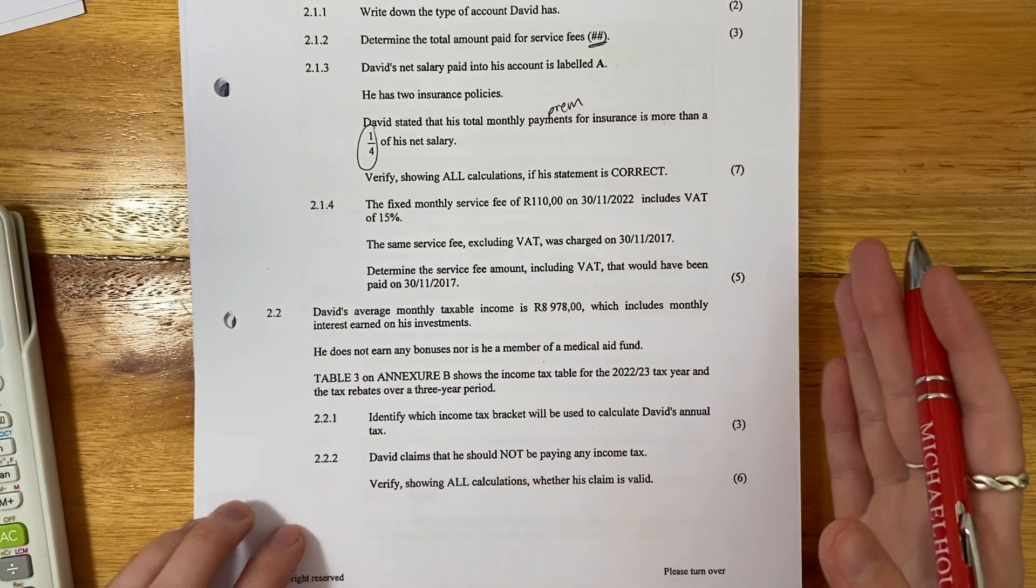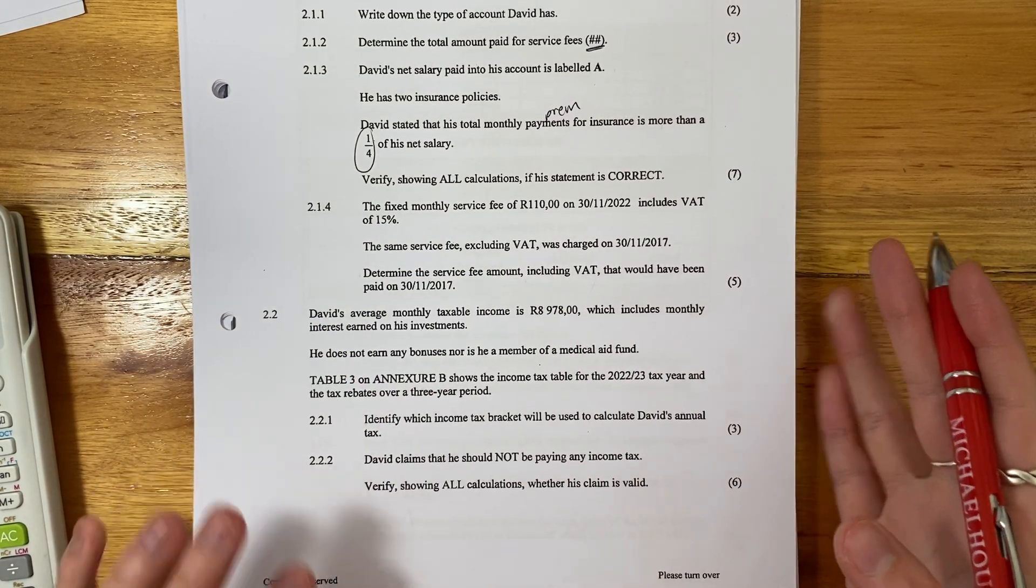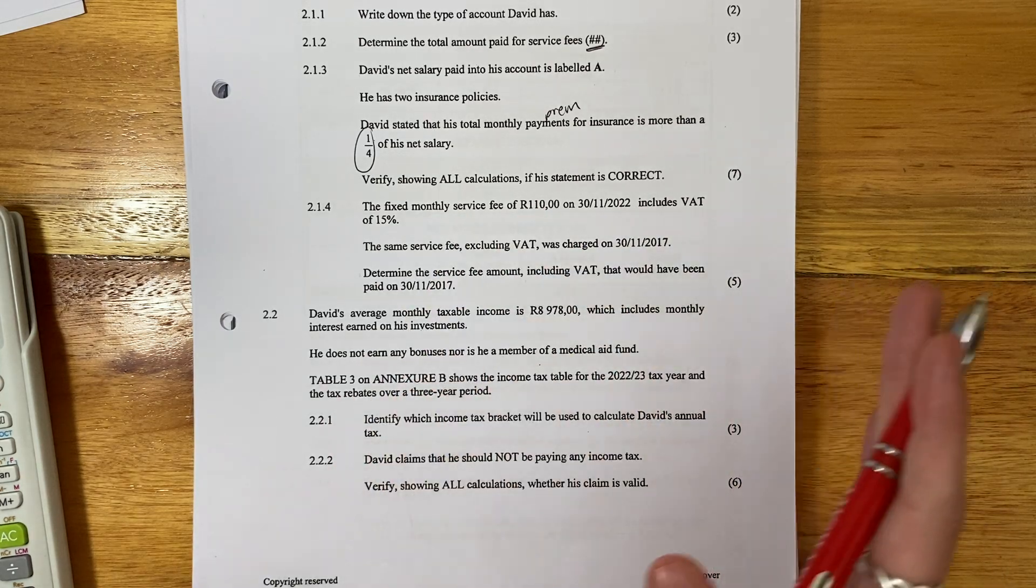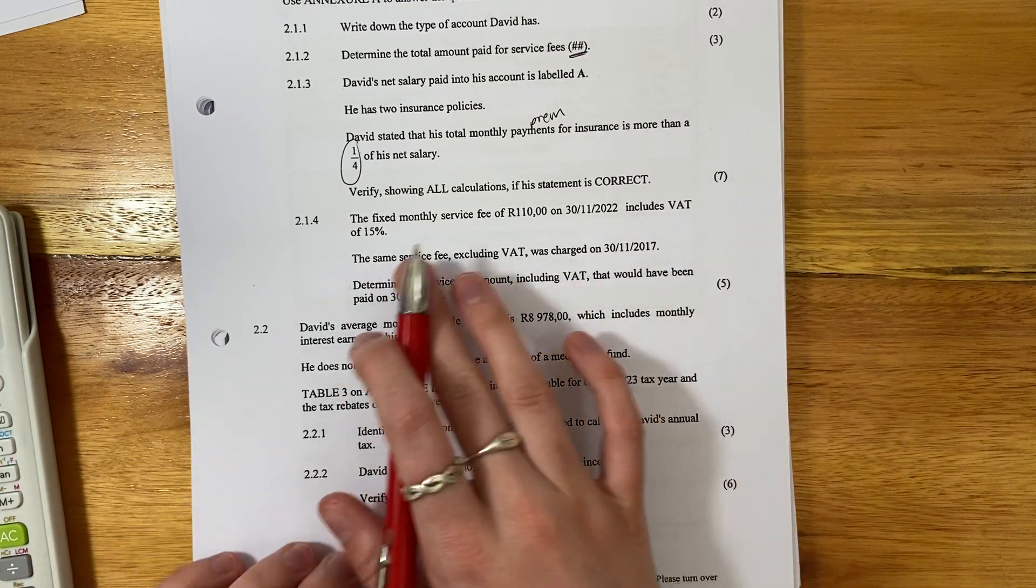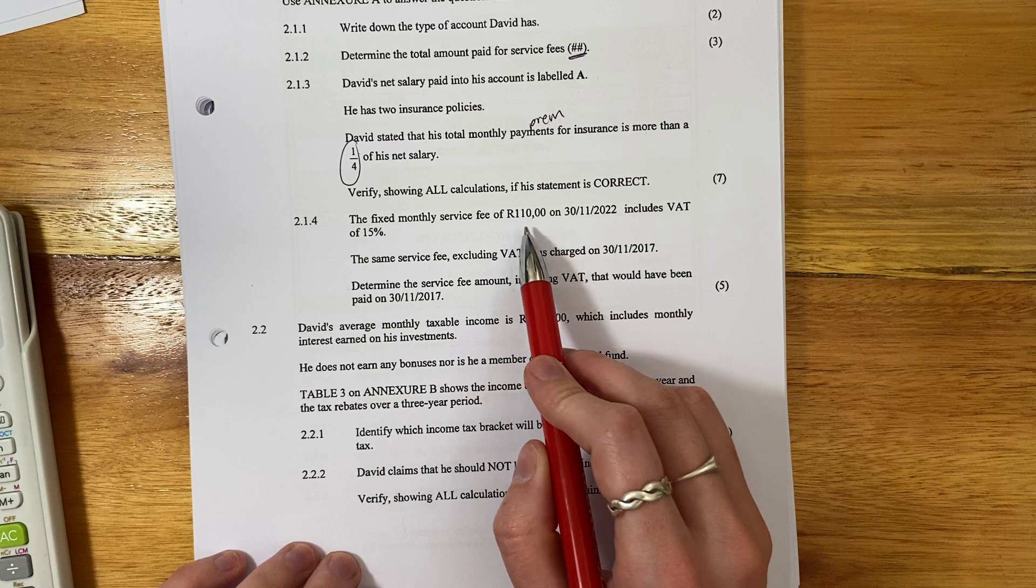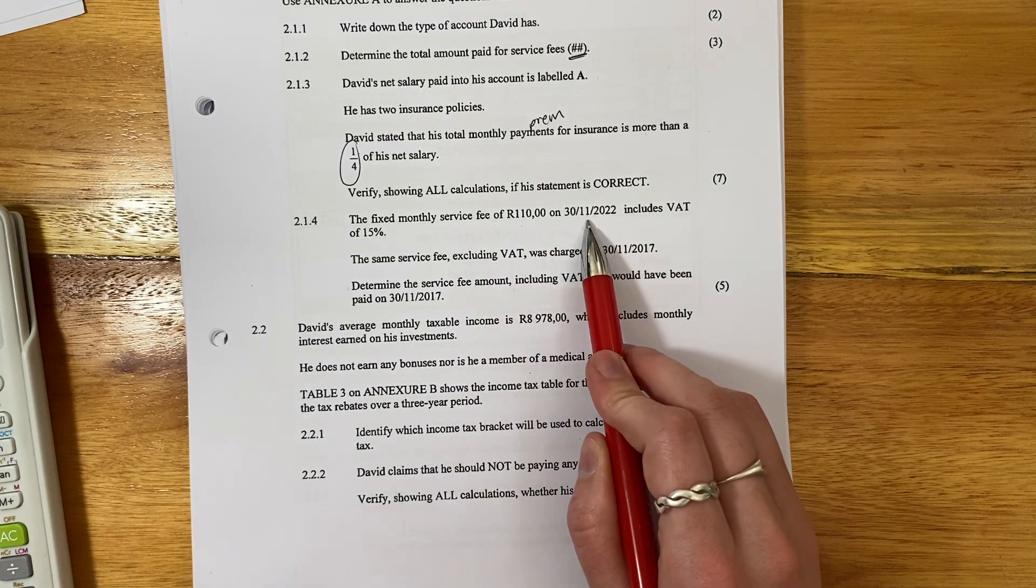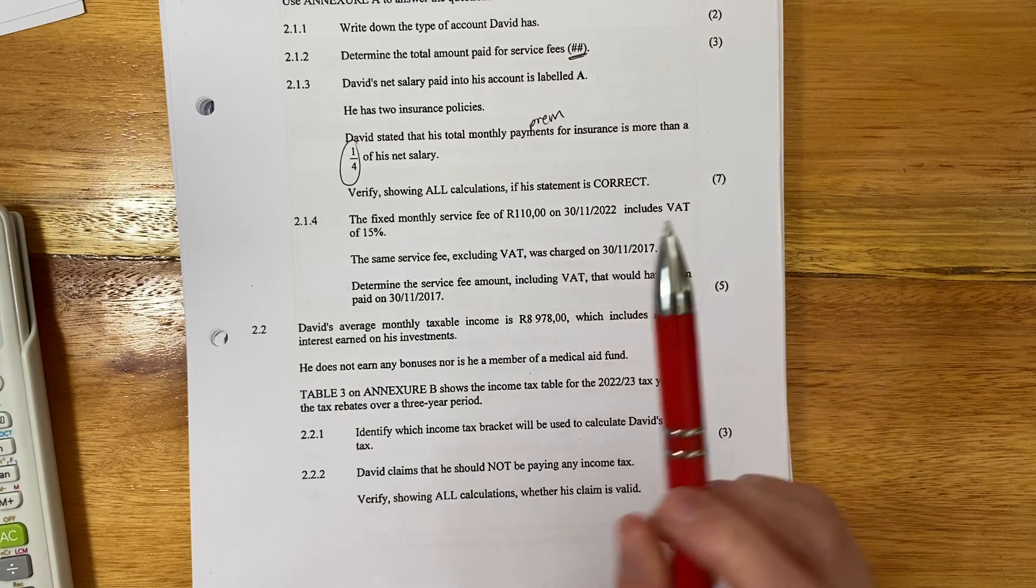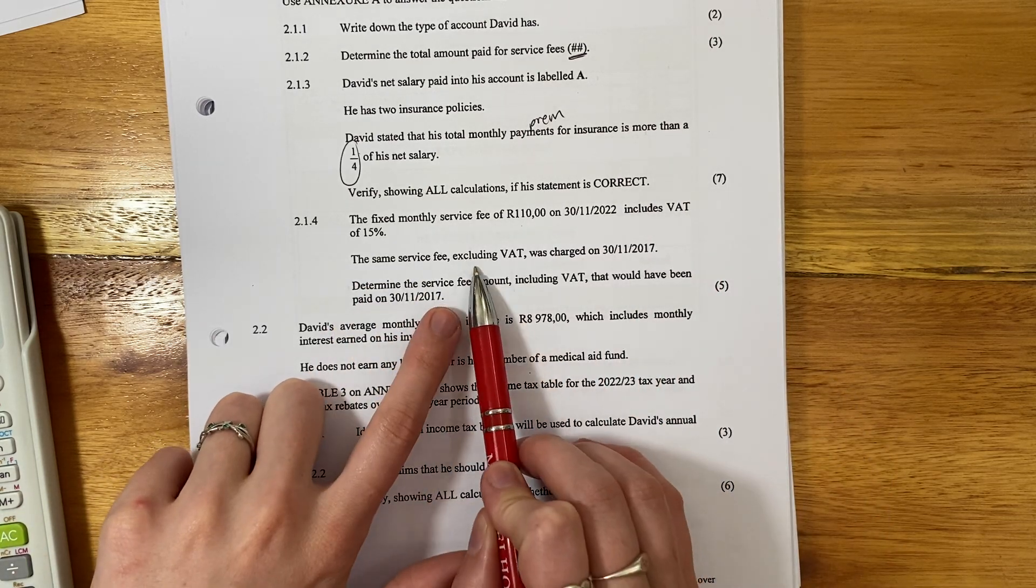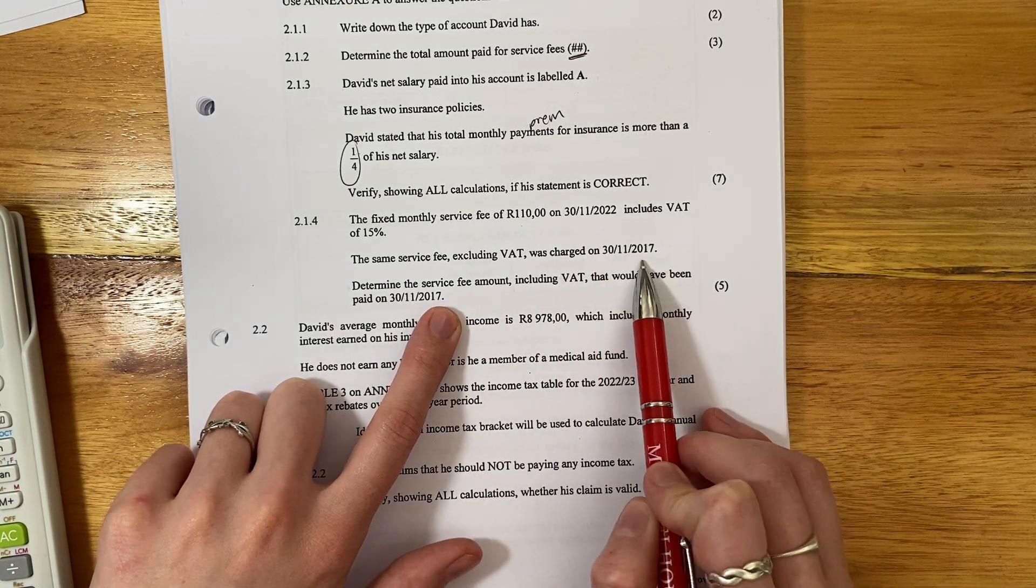All right, I seem to have just completely forgot that there was a 2.1.4 in the previous question. So let's do that, and then we'll do 2.2. The fixed monthly service fee of R110 on 30 November 2022 includes VAT. The same service fee, excluding VAT, was charged five years earlier.